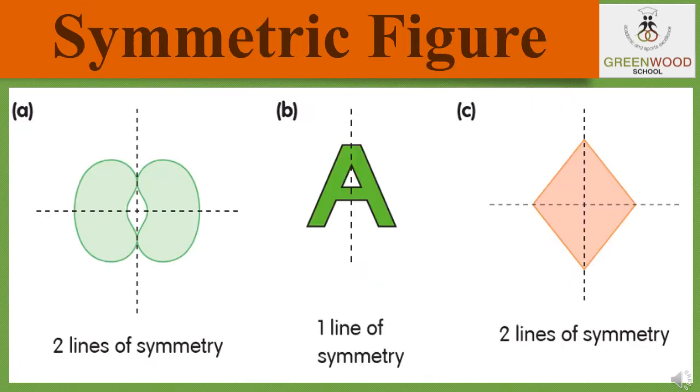Let's see some symmetric figures. The first one seems like a shape of two beans. Two lines of symmetry are passing through that figure: one is horizontal and one is vertical.